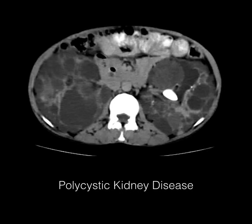This is a CT scan showing polycystic kidney disease. You see the kidneys have numerous cysts in them and they're slightly larger than they should be. Something high yield to keep in mind is that this puts you at risk for a brain aneurysm — there is an association you should know.